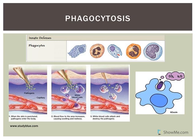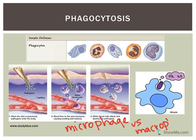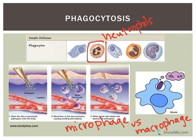We have different types of phagocytes. There are microphages versus macrophages — micro is small, macro is big. The microphages include neutrophils and eosinophils. Here is a neutrophil, which is our most abundant white blood cell circulating in the blood. We also have eosinophils, which have those dark red to orangey granules in them. Eosinophils are also considered microphages. Both are phagocytic cells.